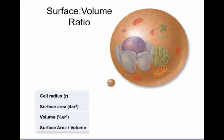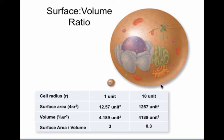For example, if we assume the small cell has a radius of one unit and the large cell has a radius of 10 units, the surface area of the large cell will be a hundred times that of the small cell.